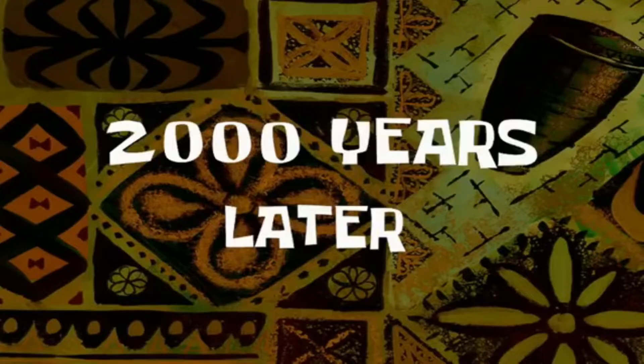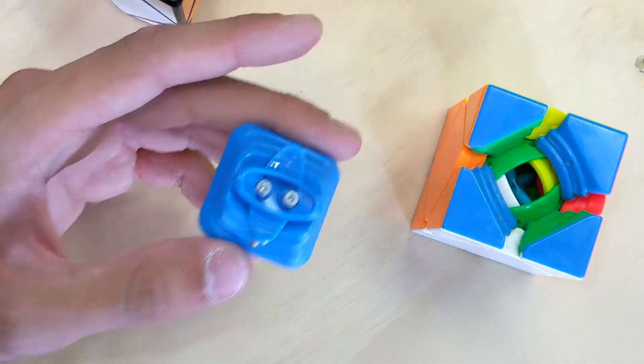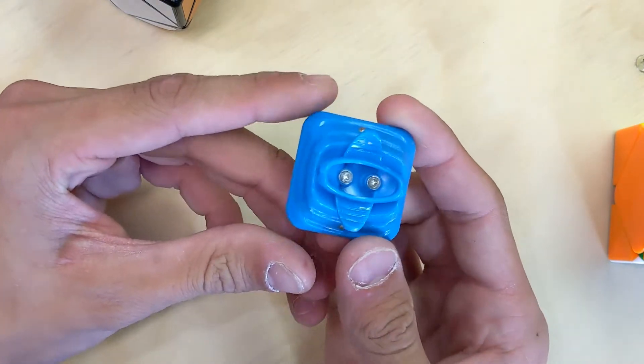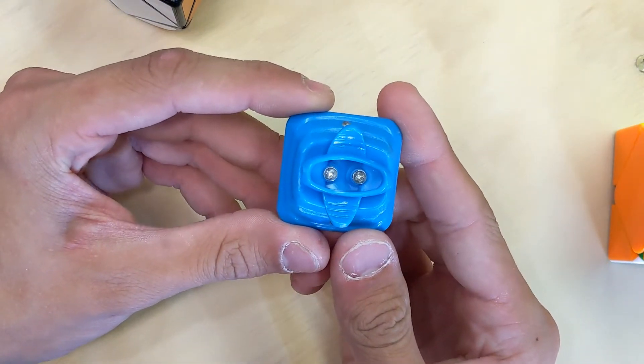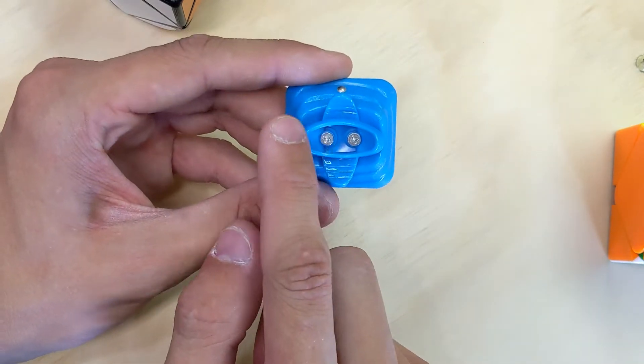Two thousand years later. All right, so like I said, if we take one of these centers out on the skewb, and we wipe the lube off of our hands, as you can see, this piece is congruent to itself in two orientations.